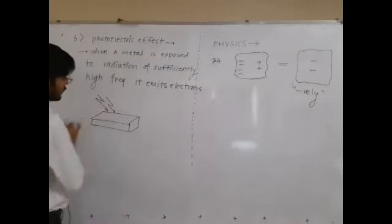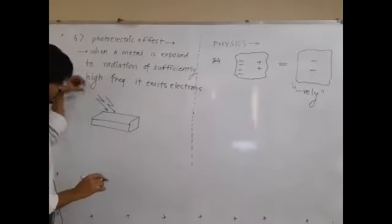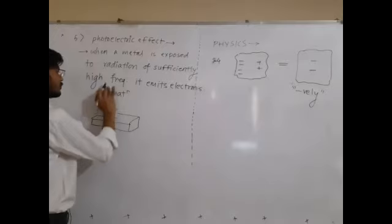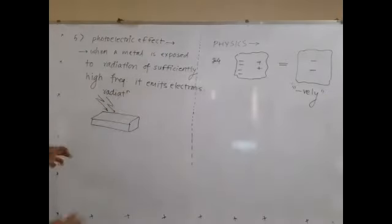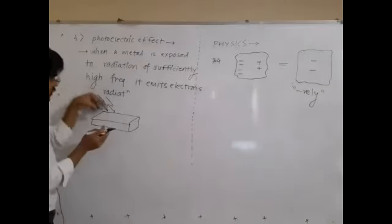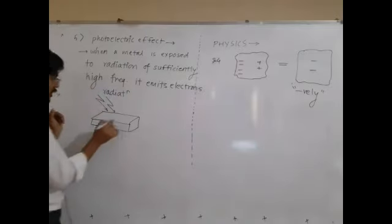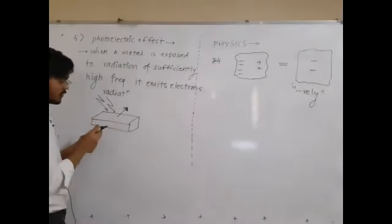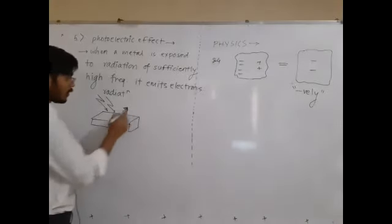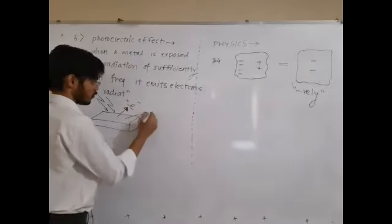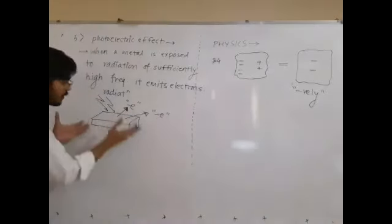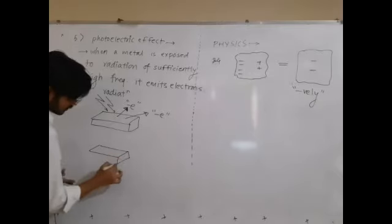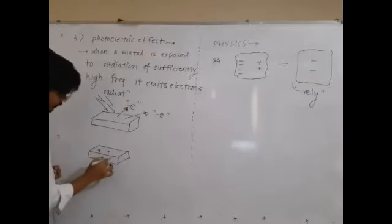We are exposing this metal surface to the radiation. What happens? It emits electrons, because the electron absorbs the energy of this radiation. These energetic electrons cannot be stopped by the metal from emerging out of the surface — they have very high energy and emerge out of the metal surface.